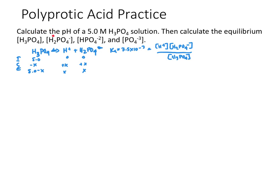We're calculating the pH of a 5.0 M phosphoric acid solution and the concentrations of each species remaining in solution. We need three Ka values, which can be looked up in an appendix. Taking H₃PO₄ and setting up the first ionization ICE table with the corresponding equilibrium expression, we plug in values from the ICE table. Because Ka is so small, we drop X in the denominator, and solving for X gives us X equals 0.19 M.